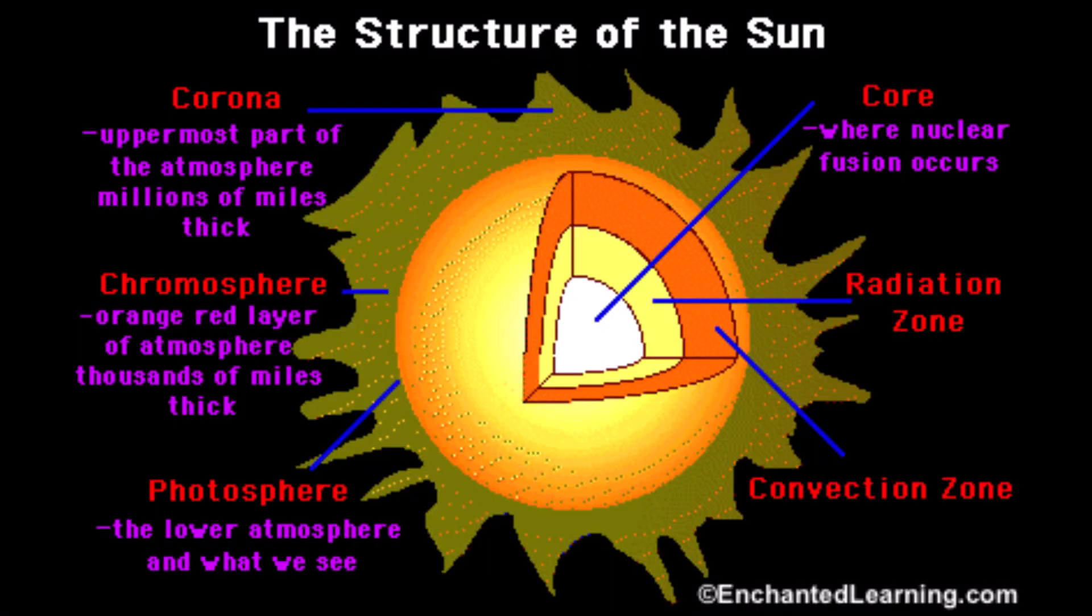The Sun's atmosphere consists of three layers: the photosphere, chromosphere, and corona.